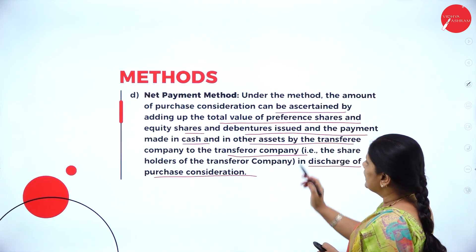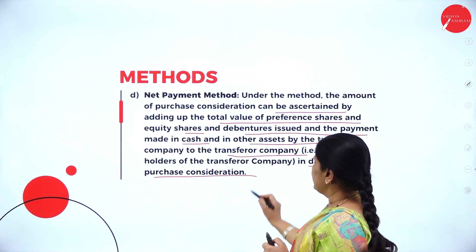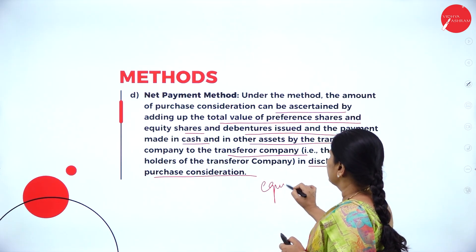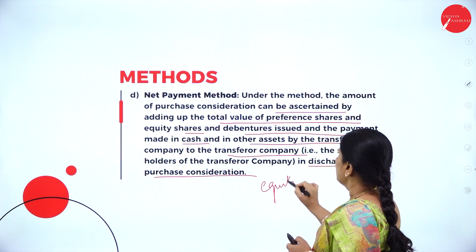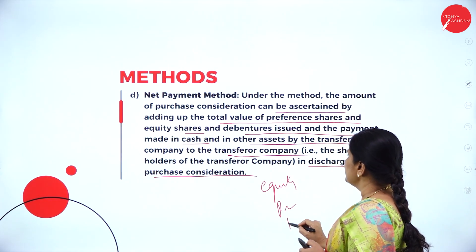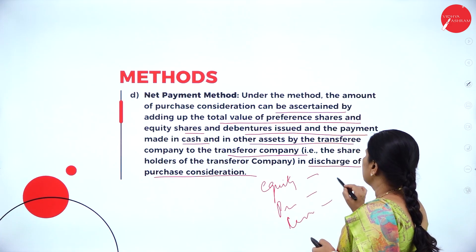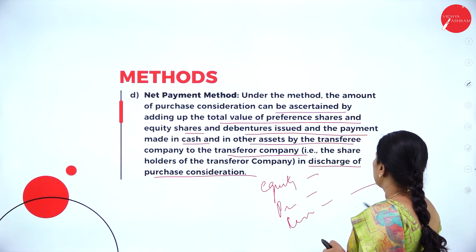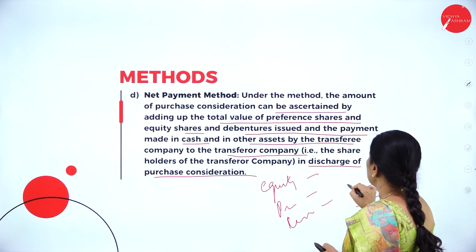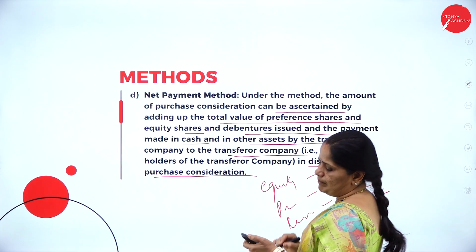Under the net payment method, the problem will give separately the number of equity shares, the number of preference shares, and the cash to be paid — everything mentioned separately. That will constitute the net payment method.